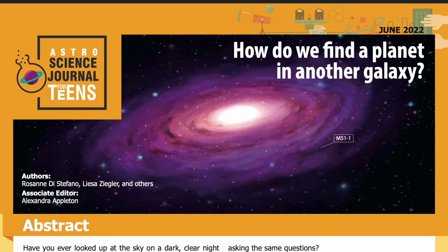Science Journal for Kids and Teens presents: 'How Do We Find a Planet in Another Galaxy?' Adapted from the original peer-reviewed paper in the journal Nature Astronomy, published on October 25th, 2021. Research conducted by Roseanne Di Stefano, Lisa Ziegler, and others from the Institute for Theory and Computation at the Center for Astrophysics at Harvard and Smithsonian. See the full list of authors and their affiliations in the accompanying PDF. Read by Miranda Wilson.